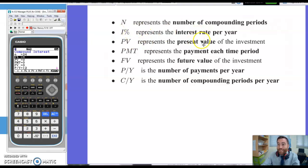Then PV is the present value, so your kind of original value. PMT is the payment for each time period, so you can do some questions where you are paying back a set amount. FV is the future value of the investment, and then P/Y is payments per year and C/Y is compounding periods per year.